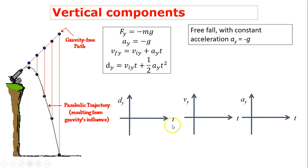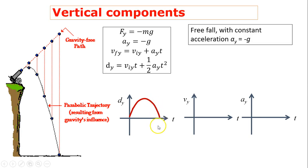On the d-y versus t graph, slope represents velocity. Because acceleration is negative g, as the projectile goes up its velocity decreases. At the very top, slope is zero, meaning velocity equals zero. Then it turns back down and slope increases in the negative direction. On the v-y graph, velocity is positive going up, becomes zero at the top, then turns negative and gets larger going down. The a-y graph is just a negative constant.